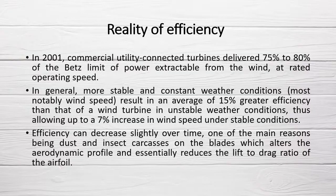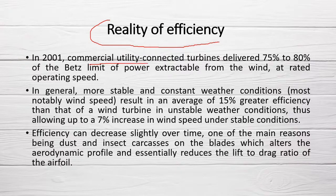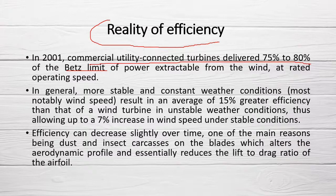In reality, efficiency is not equal to 59.26%. Commercially, utility-connected turbines deliver 75 to 80% of the Betz limit. Efficiency also depends on various other factors such as weather conditions and the velocity of the air.